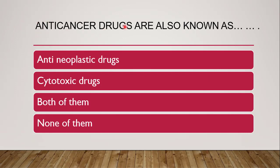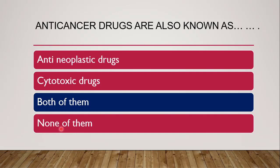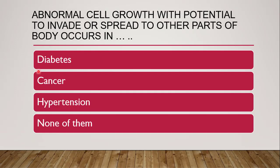First question: anti-cancer drugs are also known as dash. The options are: anti-neoplastic drugs, cytotoxic drugs, both, or none. As discussed, anti-cancer drugs are known as both anti-neoplastic drugs and cytotoxic drugs, so the correct answer is both of them.